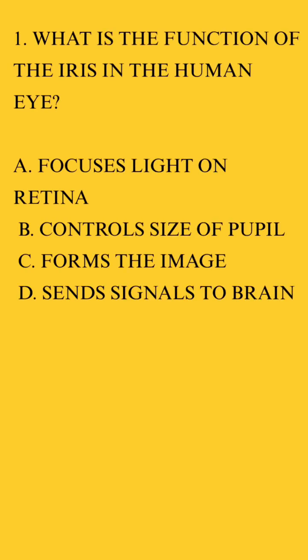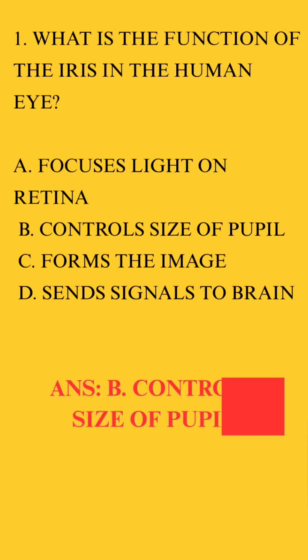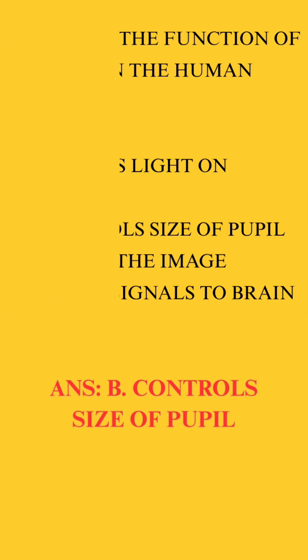1. What is the function of the iris in the human eye? b. Controls size of pupil.